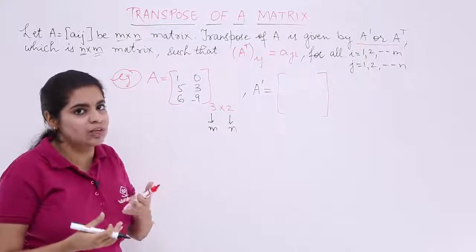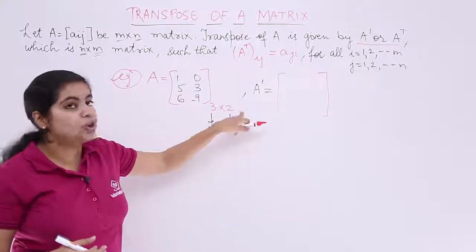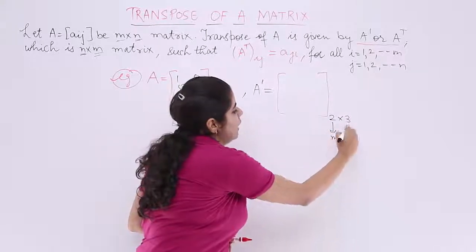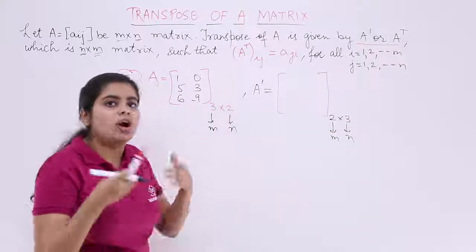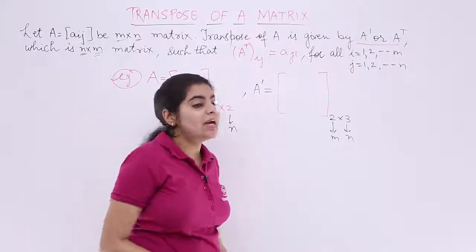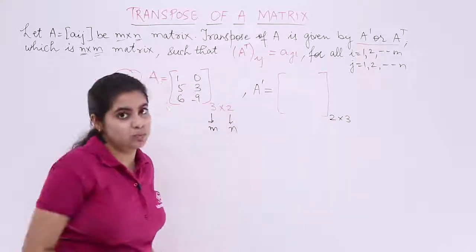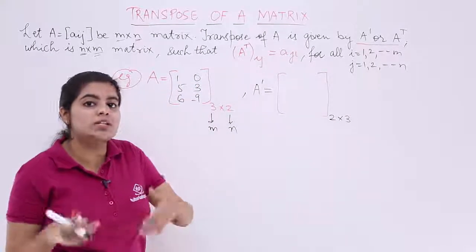Now the matrix has changed to the transpose: m becomes your 2 and n becomes your 3. So this has become your m, this has become your n, or technically speaking, if things are interchanged, m and n are interchanged. So these things will also interchange in the transpose. The rows are changed to columns, the columns are changed to rows.